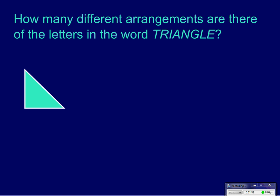So, how many different arrangements are there for the letters in the word triangle? So, triangle has got one, two, three, four, five, six, seven, eight different letters. And how many different ways can I rearrange them? Let's change colors here. So, one, two, three, four, five, six, seven, eight.